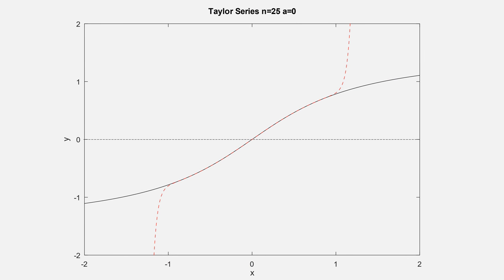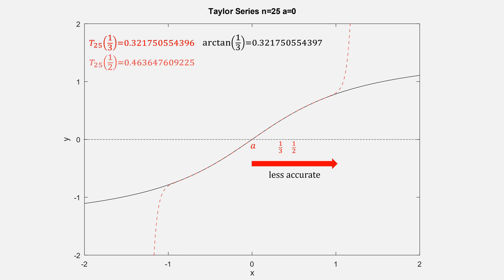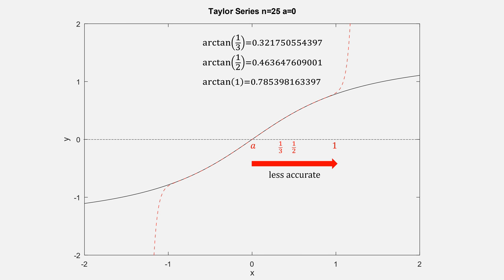Not all hope is lost, though. Recall our point A. The further away we get from A, the less accurate our Taylor series will be. For example, a third is pretty accurate, down to maybe that 12th decimal place. A half is also pretty close, only off on those last three. It's only at 1 where we're very far off. Hold on, do you notice something strange? If you take the arctangent of a third and add it to the arctangent of a half, you get the arctangent of 1. Let's try that with our Taylor series.